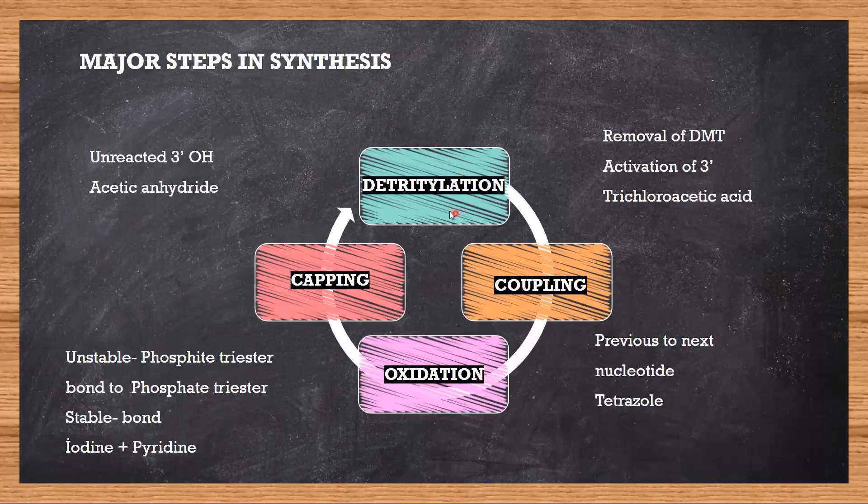What are the major steps in the synthesis? I have outlined it for the sake of clarity. There are four major steps: first is detritylation, where we remove the bulky group I showed you, followed by coupling, which is joining the two nucleotides, then oxidation and capping.